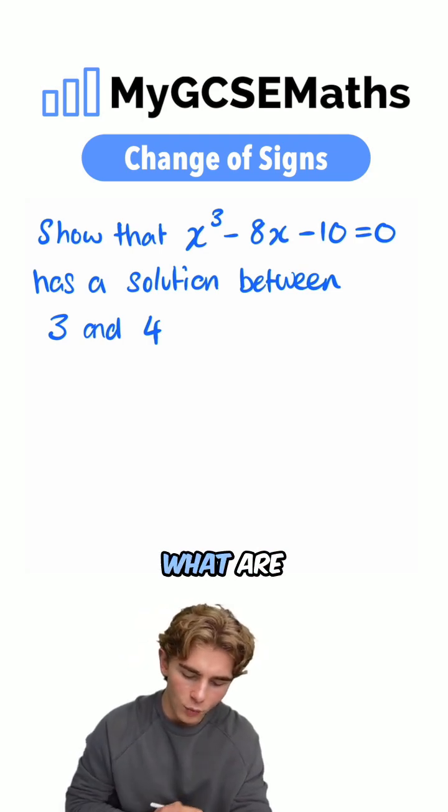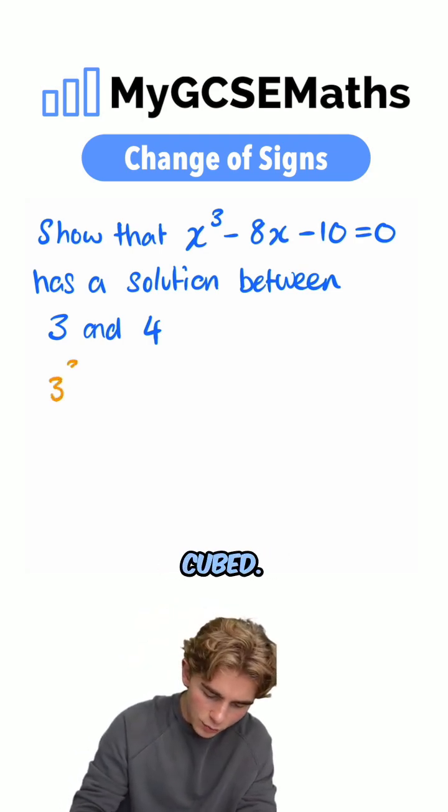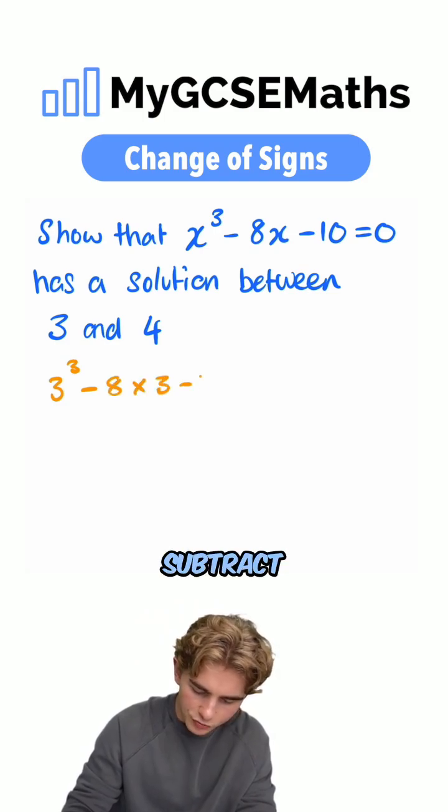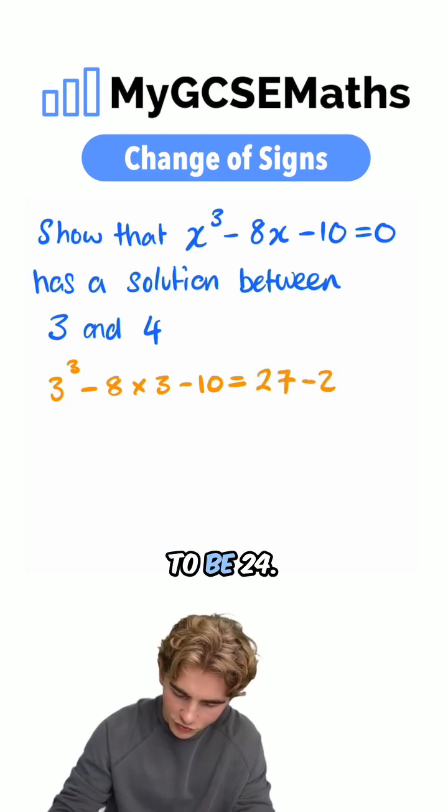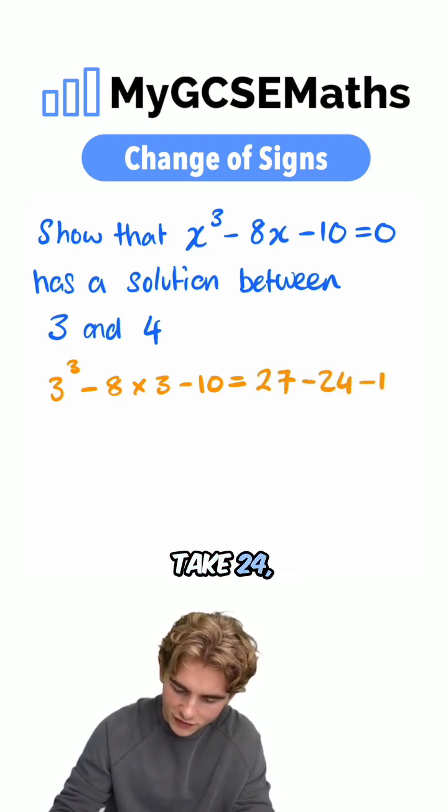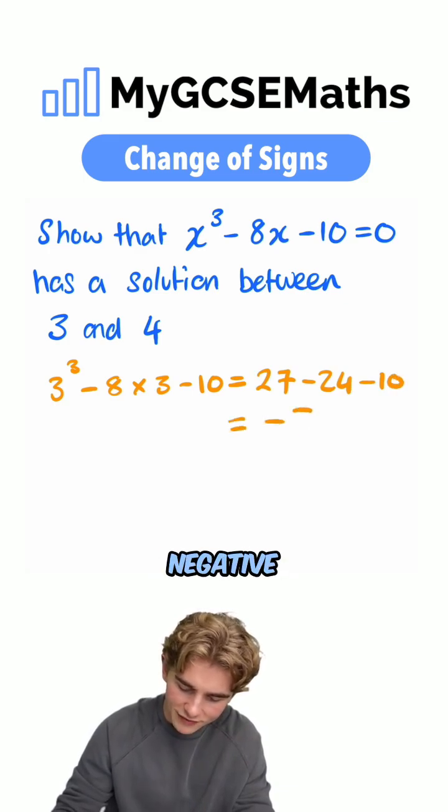So if we substitute in 3, what are we going to get? We're going to get 3³ - 8 × 3 - 10. 3³ is 27. 8 × 3 is 24. So we have 27 - 24 - 10. If we work this out, it would be -7.